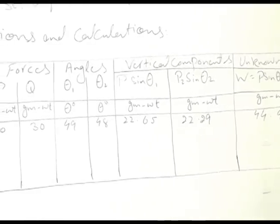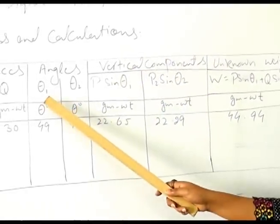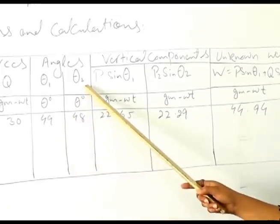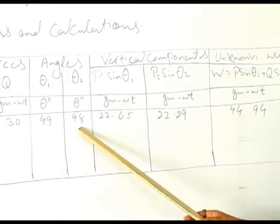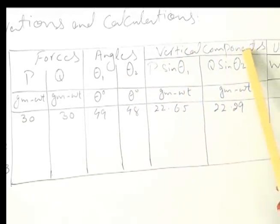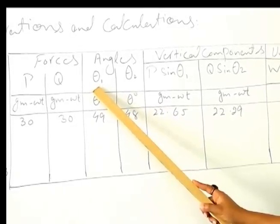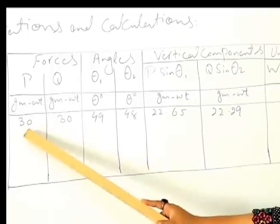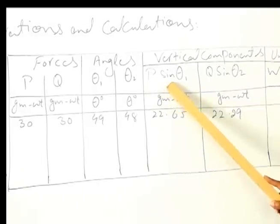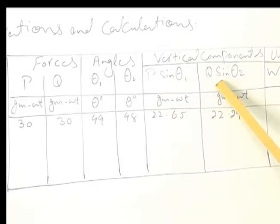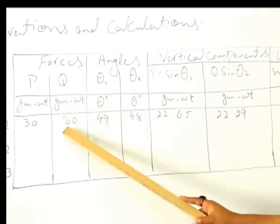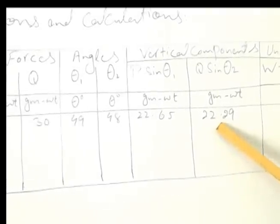Now we will calculate the angle theta 1 and all these values in the observation table. The angle theta 1 which was adjacent to the force P is 49 degree. The angle theta 2 is 48 degree. Now we will calculate the vertical components: take the sine of angle theta 1 and multiply it with the magnitude of force P, and we got the value 22.65. This is the vertical component of force P. The vertical component of force Q: take the sine of theta 2, multiply the magnitude of force Q, and the final value is 22.29.